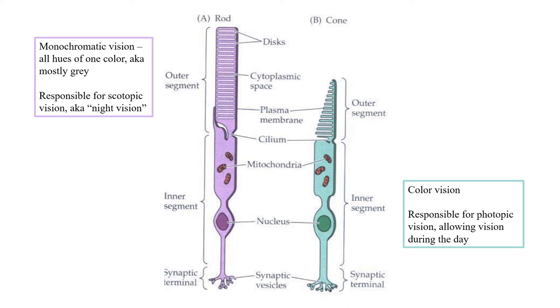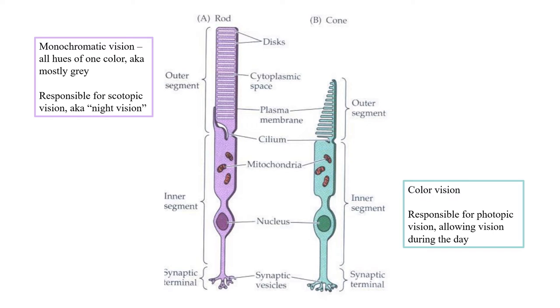Why does this happen? Inside our eyes, we have what are called photoreceptor cells, and these are used to allow our brains to process and see color, and by connection, light. There are two types of photoreceptor cells in our eyes: cones and rods.